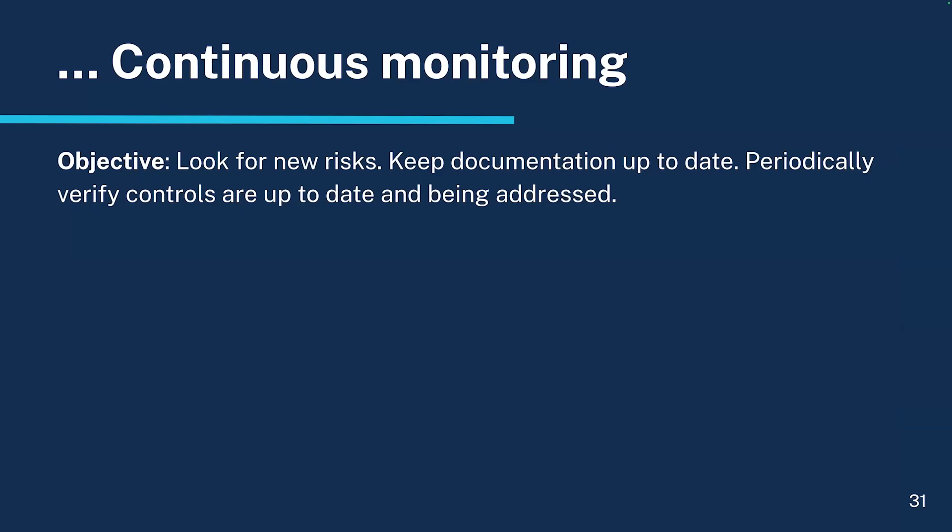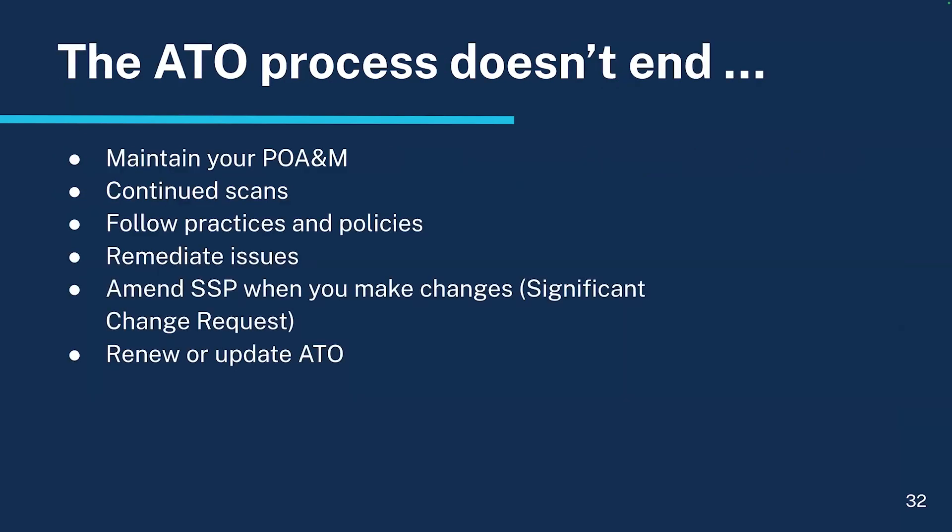Continuous monitoring. The objective is to look for new risks, keep documentation up to date, and periodically verify that controls are current and being addressed. Remember, the ATO process doesn't end. You need to maintain your POAM, continue your scans, follow the practices and policies you laid out, remediate any issues that come up, amend your SSP when you make changes — that's called a significant change request — and renew or update your ATO based on your agency policy.